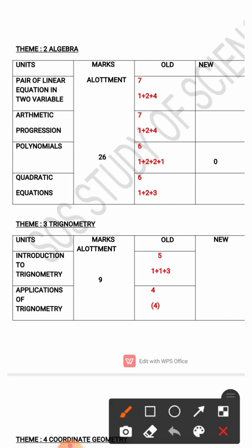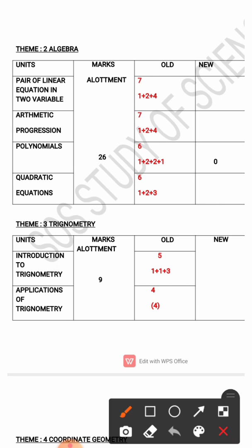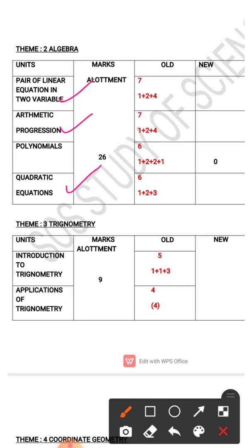Arithmetic Progressions was allotted 7 marks — 3 questions: 1-mark 1, 2-mark 1, and 4-mark 1. Polynomials was allotted 6 marks in the previous year, but as it is deleted this year, the marks allotment will be 0. Quadratic Equations was allotted 6 marks — 3 questions: 1-mark 1, 2-mark 1, and 3-mark 1. Note that Pair of Linear Equations, Arithmetic Progressions, and Quadratic Equations each carry a 4-mark question, so you need to give these parts more importance.